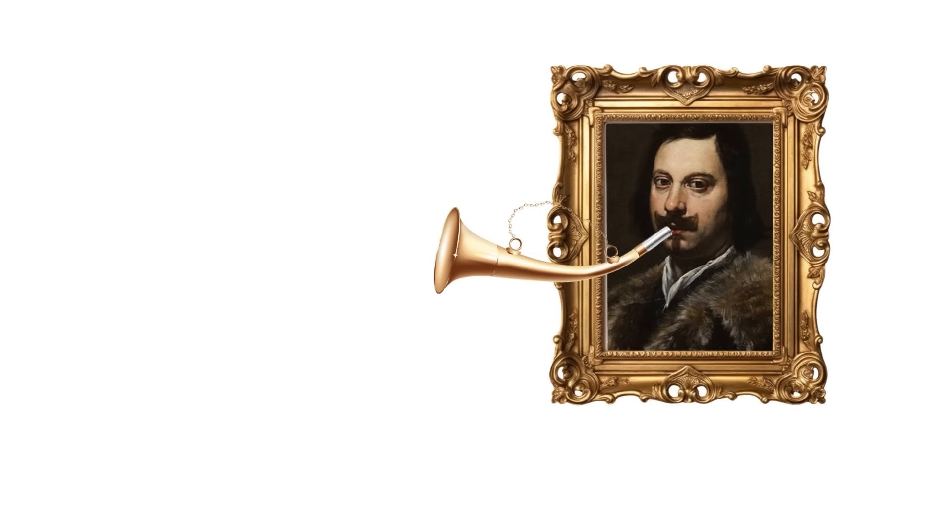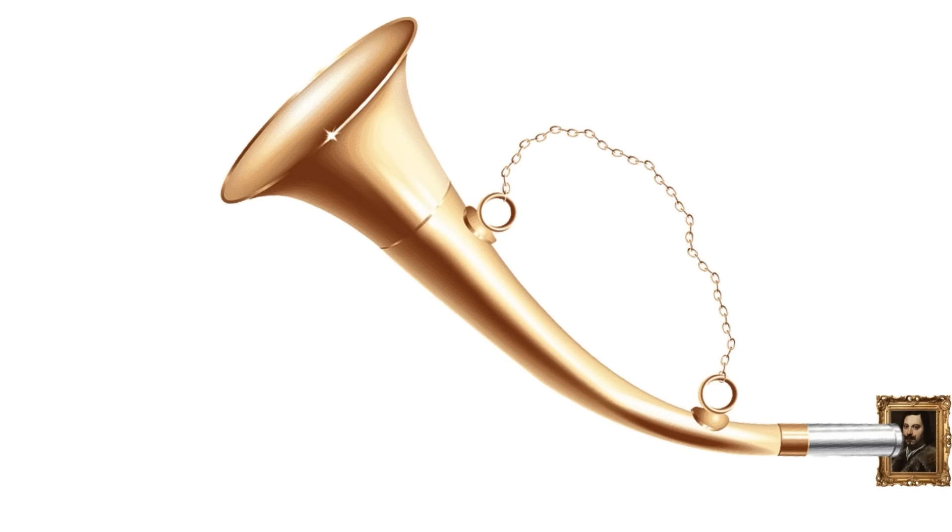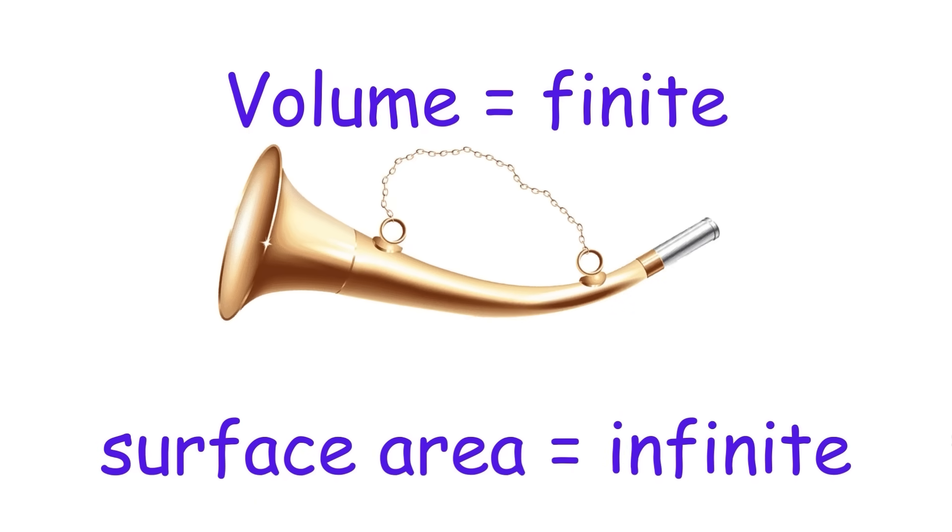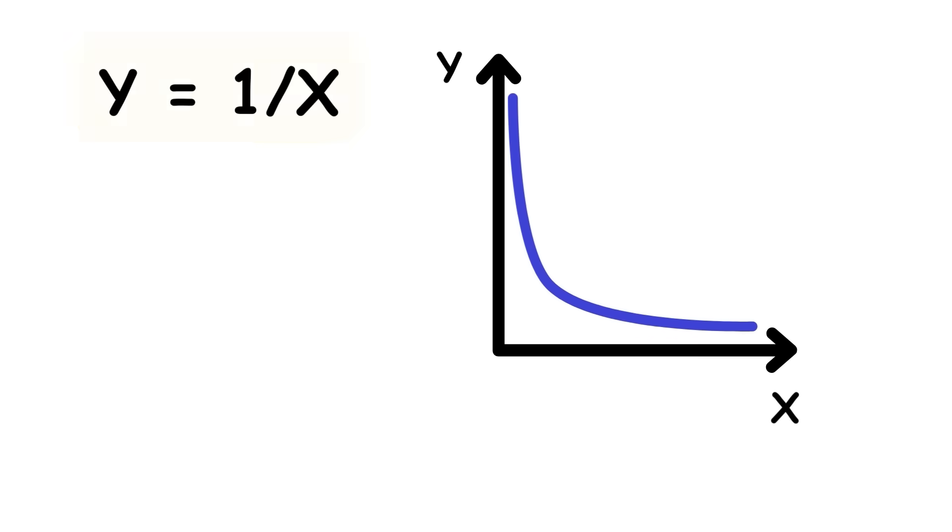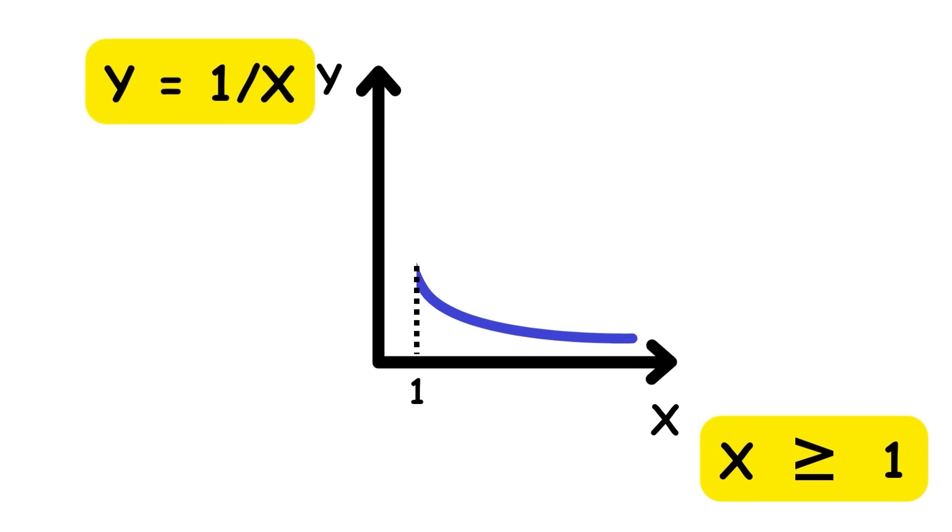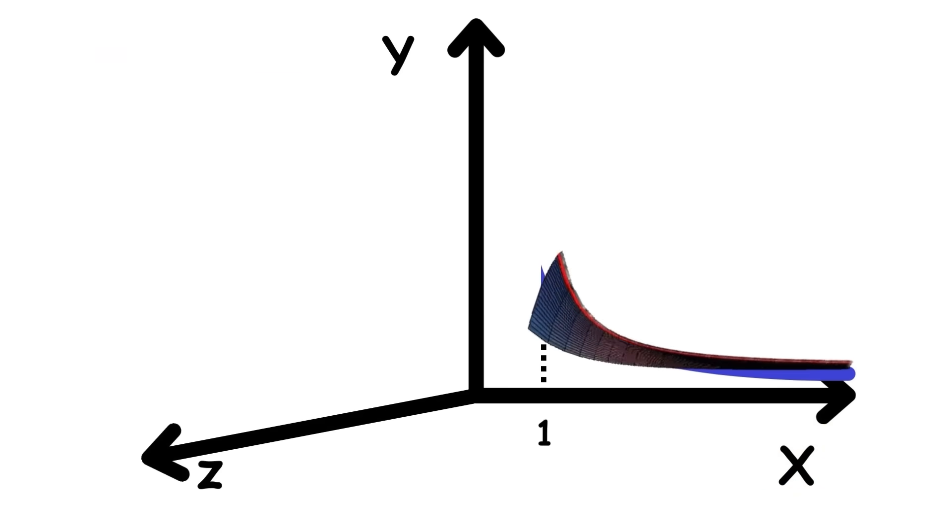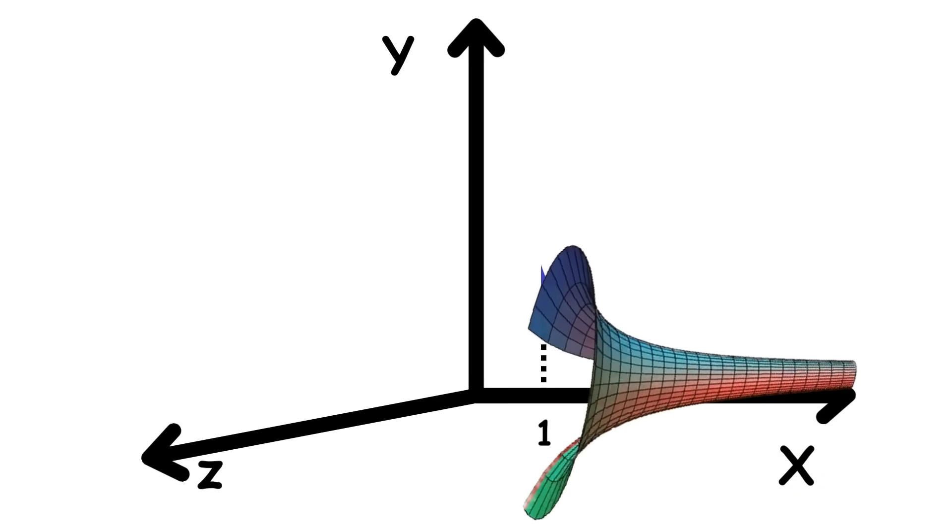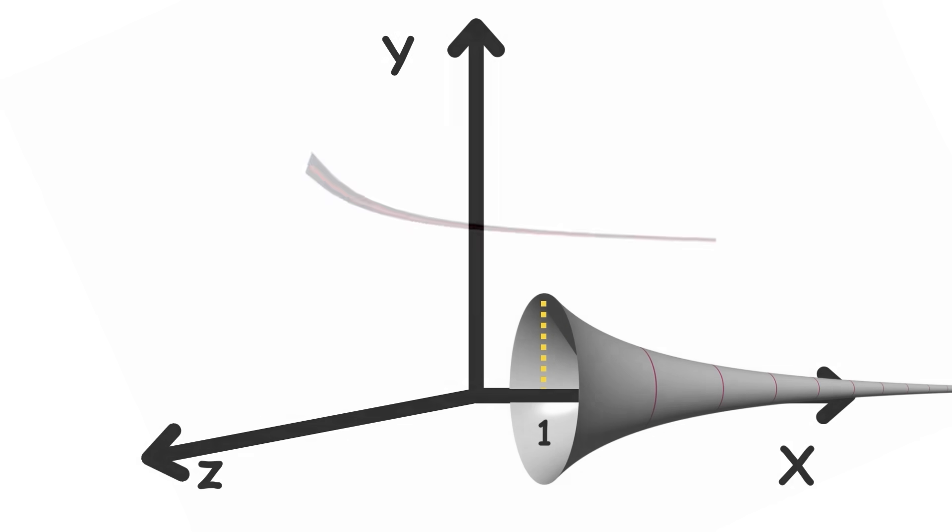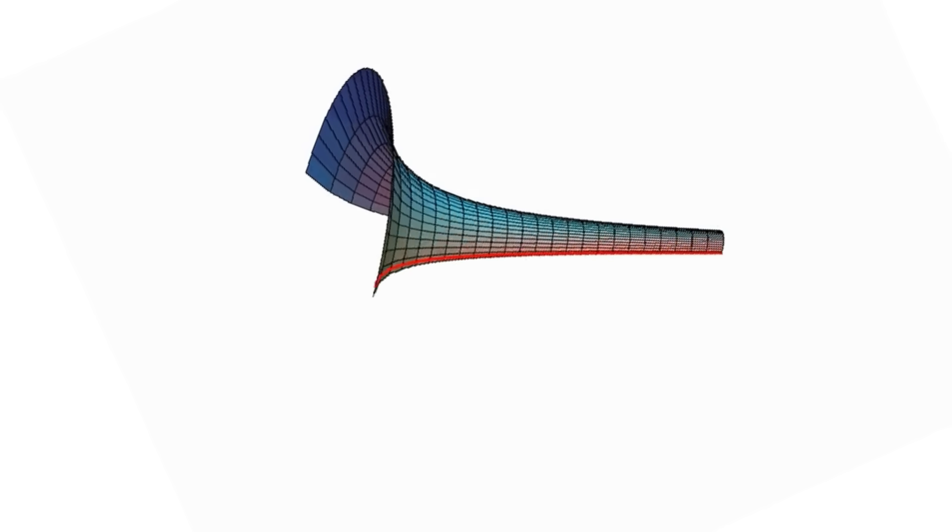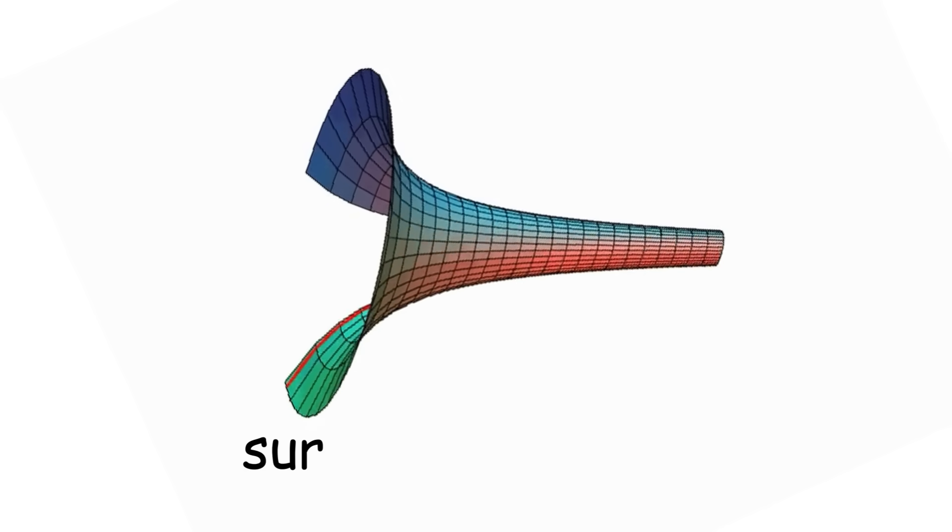Gabriel's horn is an infinitely long horn-shaped object with a finite volume but an infinite surface area. It was first considered by Italian mathematician Evangelista Torricelli in a paper published in 1643. In order to form Gabriel's horn, take the graph of the curve y equals 1 over x in the xy plane, with the domain of x being greater than or equal to 1. Then rotate this curve in three dimensions around the x-axis and fill in all the points that the curve passes through, forming a surface.